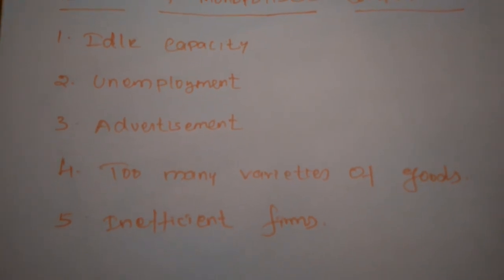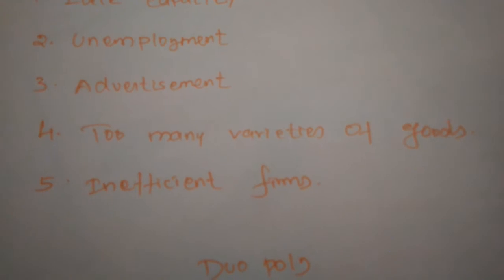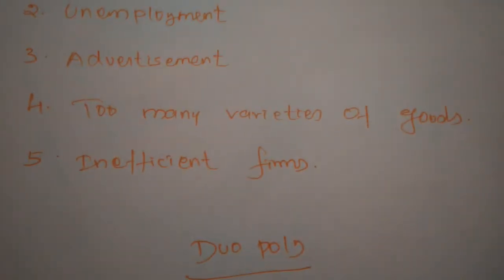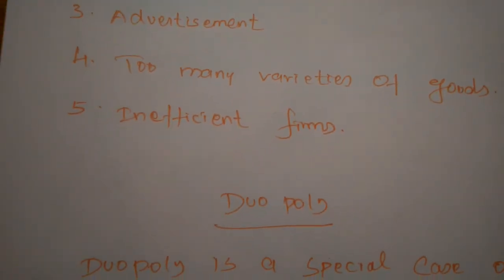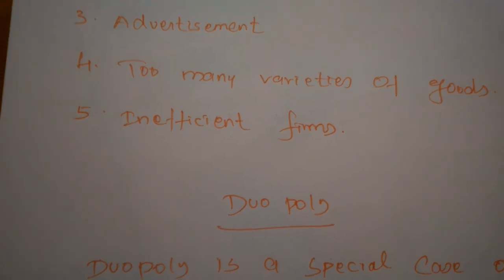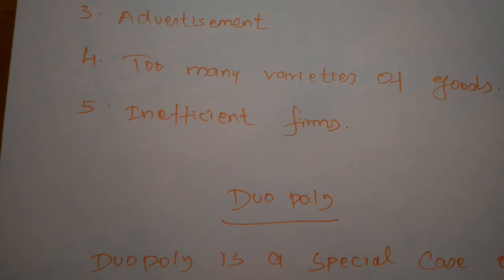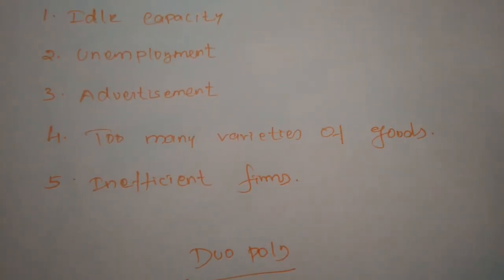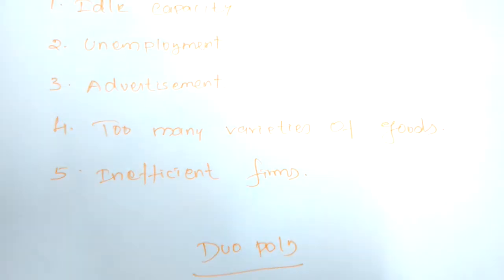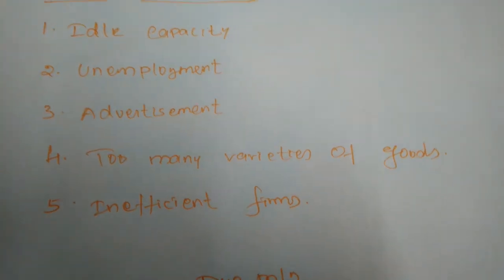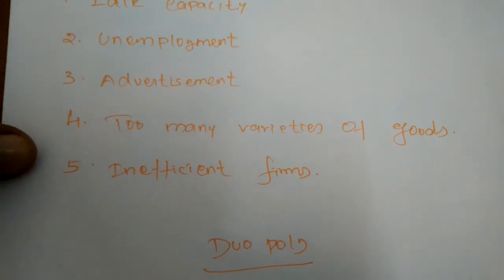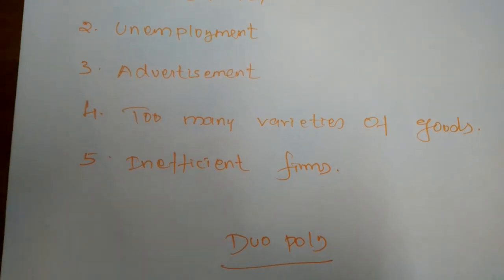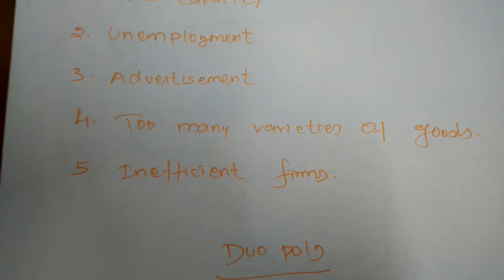Next, too many varieties of goods — introducing too many varieties of goods is another waste of monopolistic competition. Goods differ in size, shape, style, and color. A reasonable number of varieties would be sufficient, but in this market too many varieties exist. For example, for toothpaste, some types would be enough, but when you go to the market there are too many varieties, so when a consumer wants to purchase one shampoo or soap they become confused.